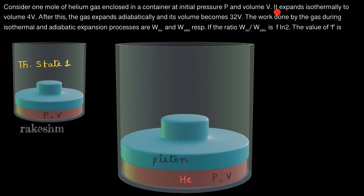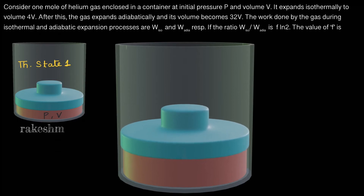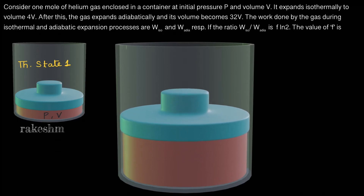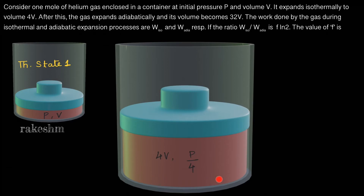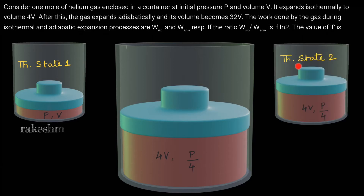This gas expands isothermally to a volume 4V — isothermal means temperature is constant. After expansion, the volume is 4V and since temperature is constant, PV equals constant, so the pressure becomes P/4. We call this thermodynamic state 2, with coordinates 4V and P/4.